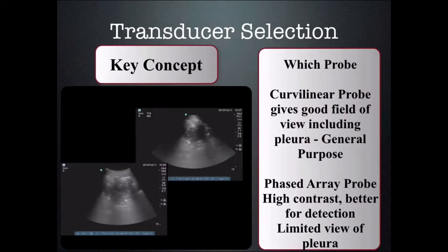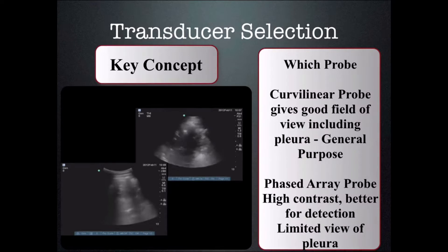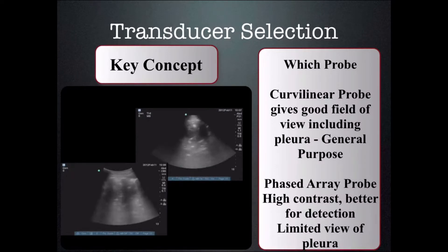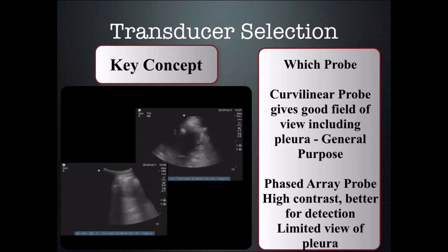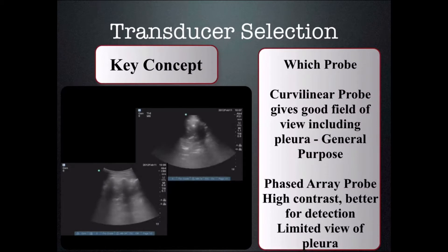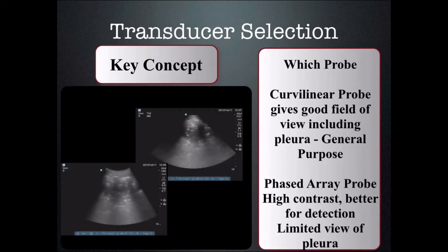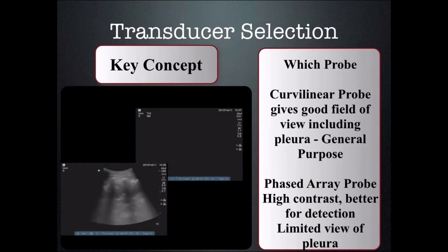Which probe do we want to use? The curvilinear or abdominal probe gives a good field of view — we can see a lot of lung in one probe position — and I use it as a general-purpose probe. But the phased array probe, which gives a narrow field of view at the pleura, provides a higher-contrast image and is better for detection of the hyperechoic linear air-filled bronchi indicative of hepatization. Therefore I generally scan with the phased array or cardiac probe initially unless I'm looking for a pneumothorax, in which case I use the curvilinear because it is better at looking at the pleura.